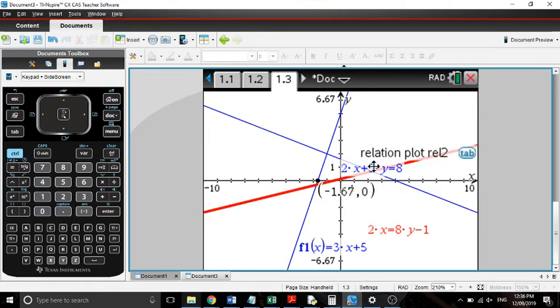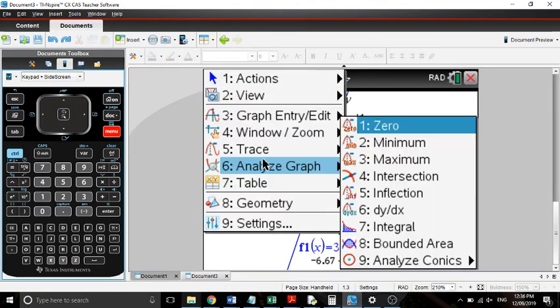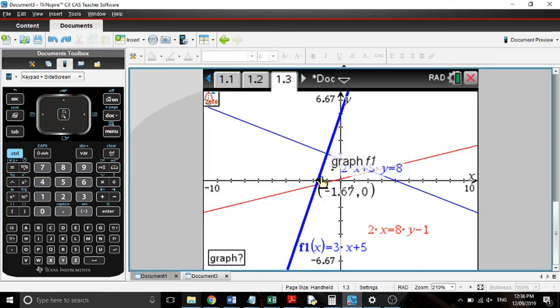And then once again, to find any x-intercepts, we just say menu, analyze graph, 0, it'll ask us which graph because we've got a few there. I'll choose that one, set my boundary, and it tells me where the x-intercept is. Are there any questions about any of that at all? Okay, so like I said, I'll put up videos to support you guys in that, what I've just done there, and then anything else that may come up with CAS, and I'll give you solutions to those questions, to the exam questions that I suggest you do as well, as well as those ones that I've put up.